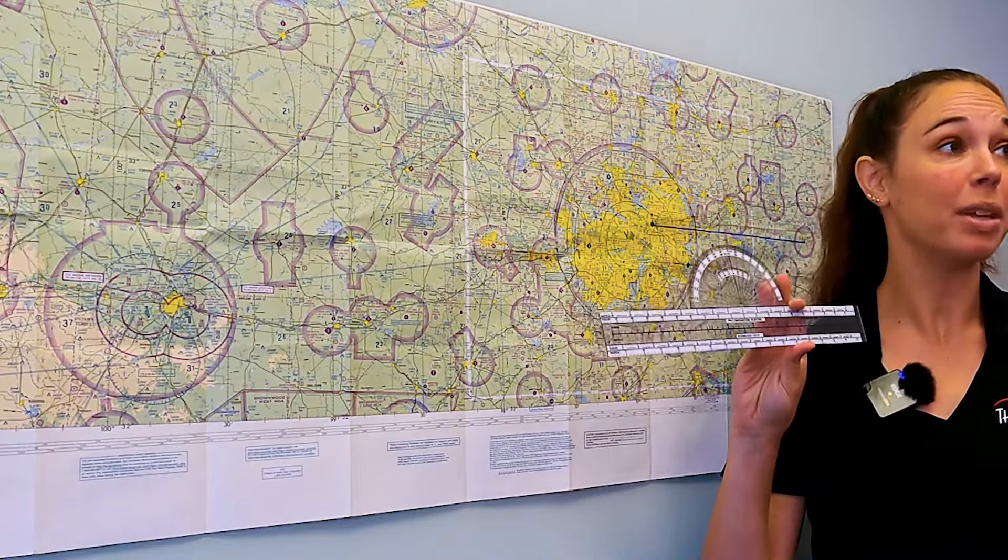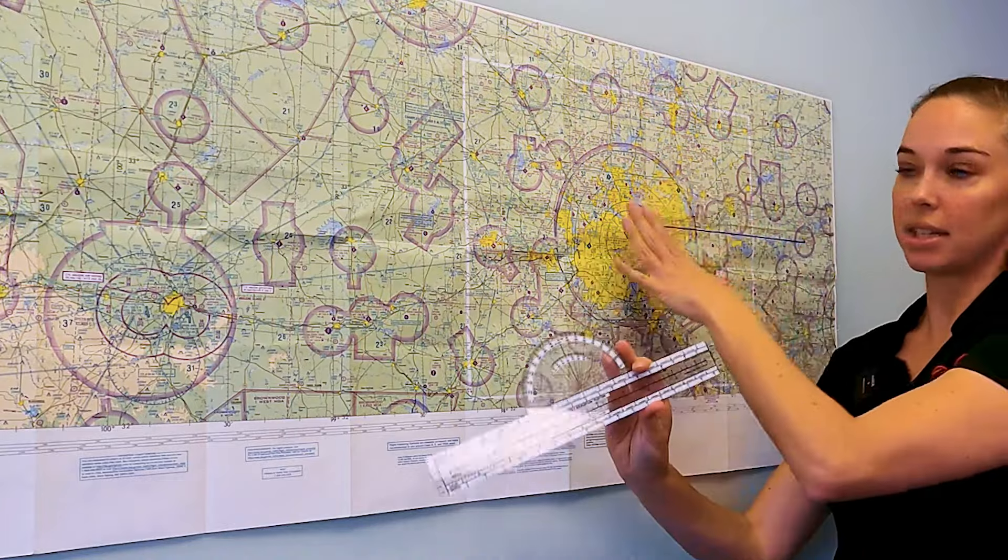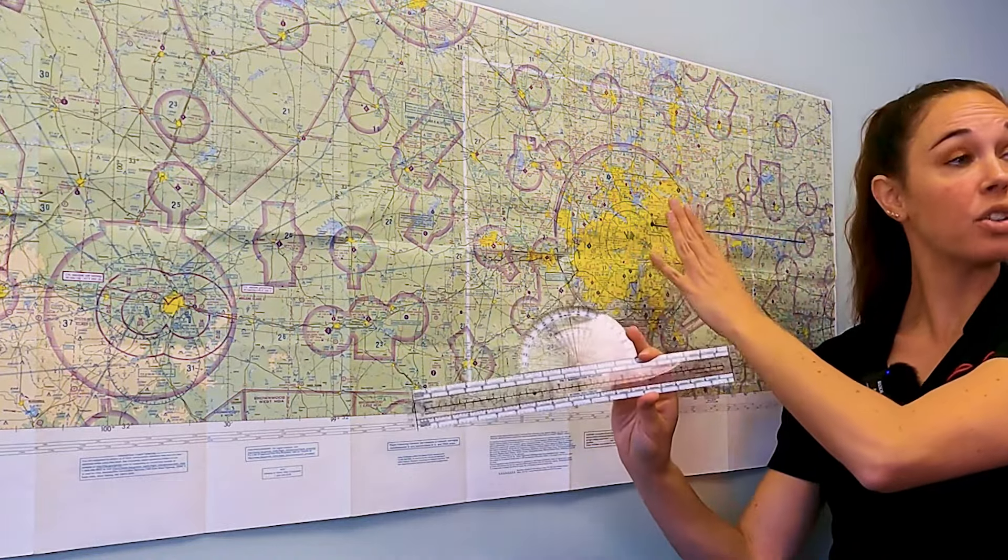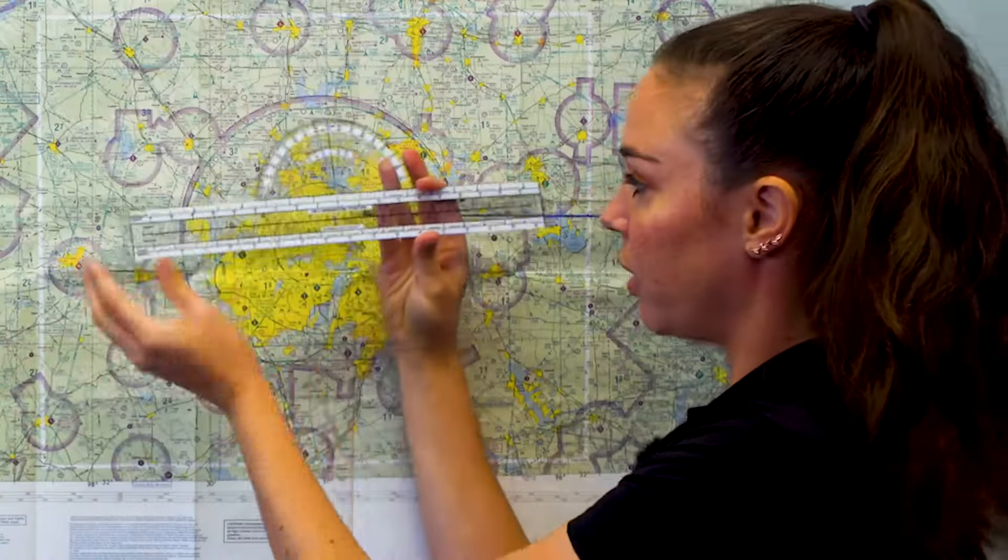If you look on your plotter, it's going to tell you there's a couple different scales for that ruler. And this is a really common place where students make a mistake. So we want to make sure we're on the side that matches the same chart we're using. So I'm using a sectional chart. So I want to have the sectional scale ruler on the front side.